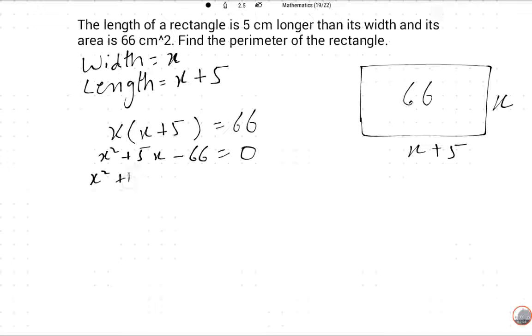Now we take common: x(x + 11) - 6(x + 11) equals 0, so (x + 11)(x - 6) equals 0.